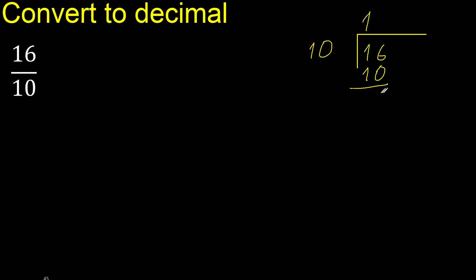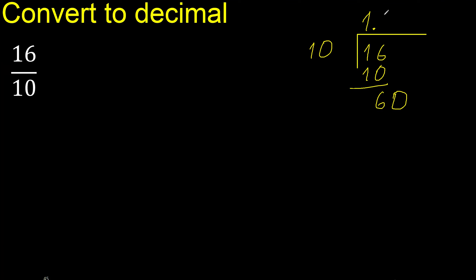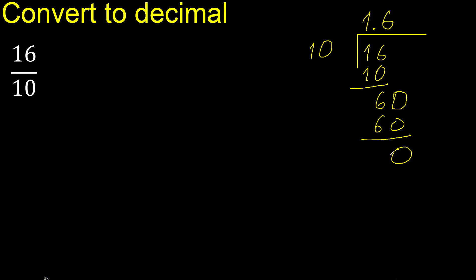There is no number that goes down, therefore always complete with 0. Complete here with a decimal point: 10. Multiply by which number is nearest to 60? Multiply by 6 is 60. Subtract: 0.